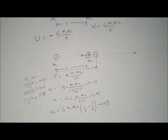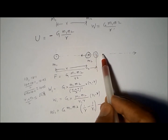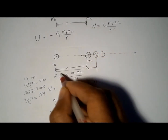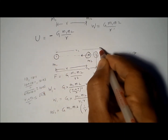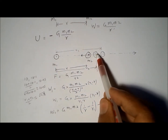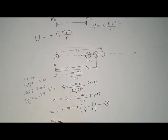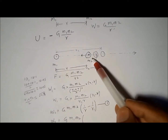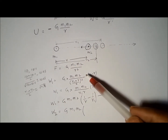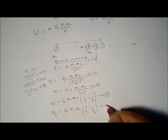Now we move mass M2 further to a new position at distance R2 from M1. There again work is done in moving from distance R1 to R2. Using the same derivation — which I leave as an exercise — the work W2 = G·M1·M2 × (1/R1 − 1/R2). We call this equation 2.